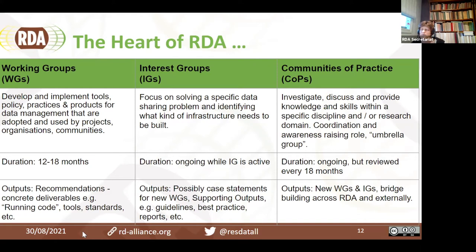Interest groups look at solving specific data sharing problems and identifying what kind of infrastructure may need to be built, but they don't necessarily build it. Interest groups can be ongoing — we have a few groups that started in 2013 and are still going strong. Their outputs can include case statements for new working groups, guidelines, best practices, reports, and survey findings. We have quite a few interest groups that start with a broad discussion, narrow down to specific tasks, and then spawn new working groups to address those topics.